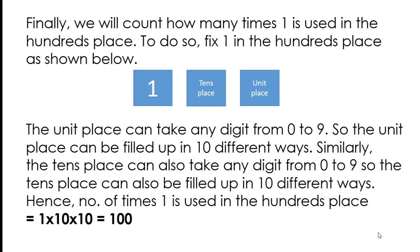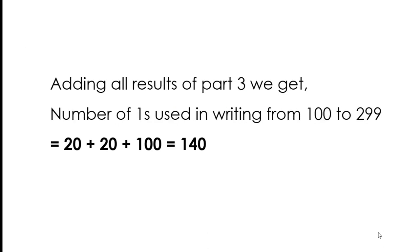Finally, we count how many times 1 is used in the hundreds place. Fix 1 in the hundreds place. The units place can take any digit from 0 to 9, so it can be filled in 10 different ways. Similarly, the tens place can also take any digit from 0 to 9, giving 10 ways. Hence, the number of times 1 is used in the hundreds place equals 1 × 10 × 10 = 100. Adding all results for Part 3: the number of ones used in writing from 100 to 299 equals 20 + 20 + 100 = 140.